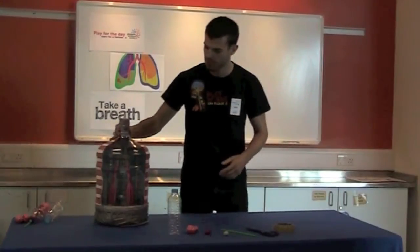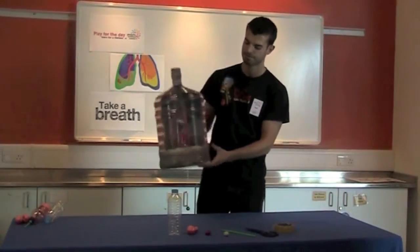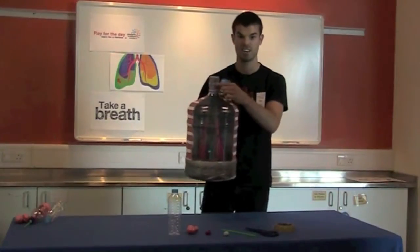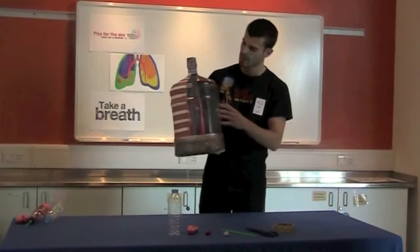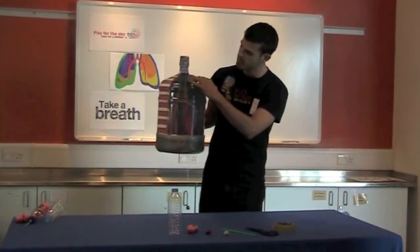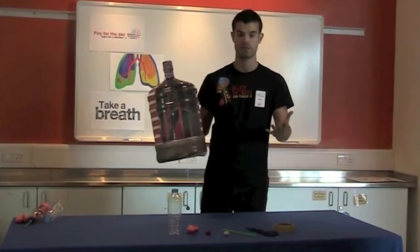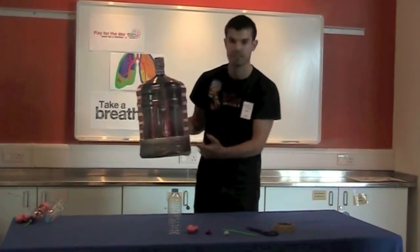Now, this model here is kind of like what our lungs look like inside. We have our trachea at the top, which is this bit inside our necks, where we draw the air in. We then have these bits here called the bronchi, which splits it into our lungs because we have two of them, which are hanging here like these balloons.